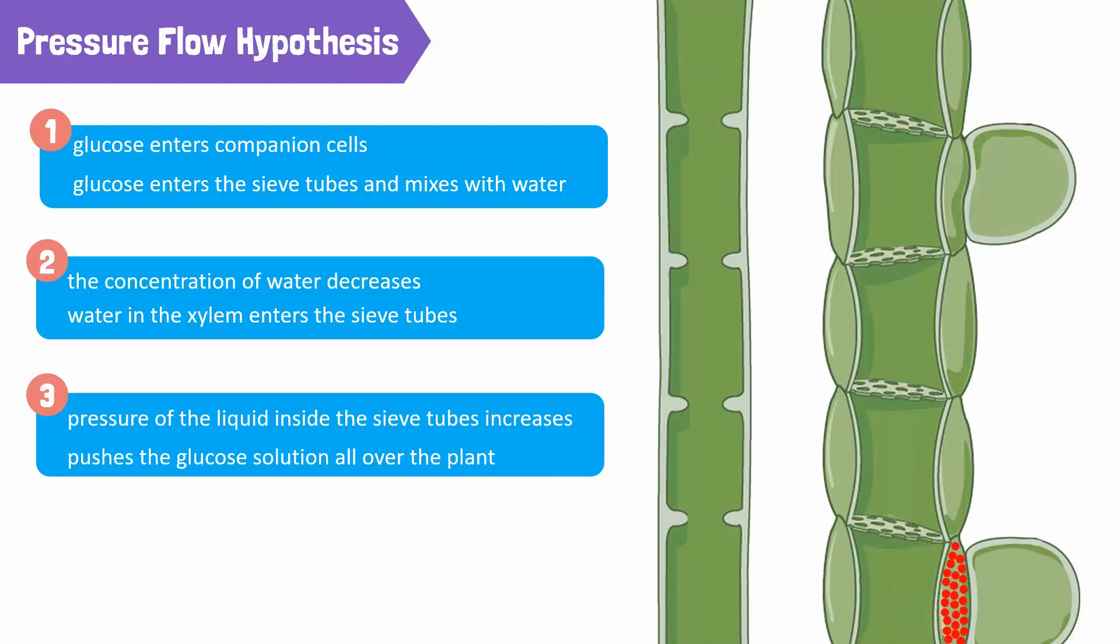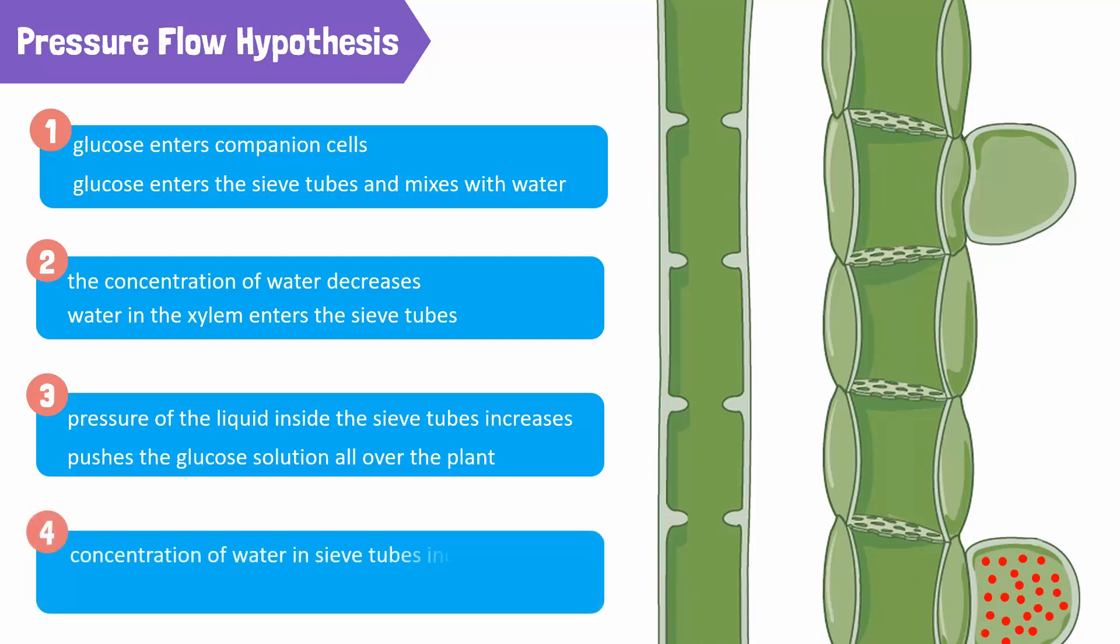When the storage areas take up glucose from the water, the concentration of water in sieve tubes increases. Due to this concentration difference, water returns into the xylem.